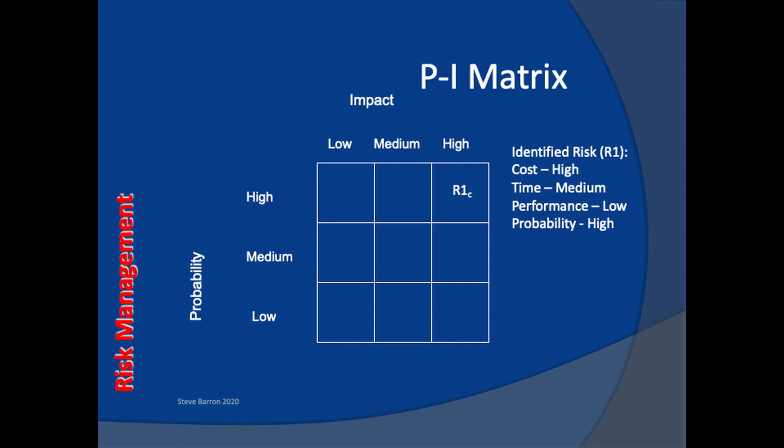In the PI matrix, we position the risk for R1 in relation to cost in the cell representing high probability, the top row and high impact.